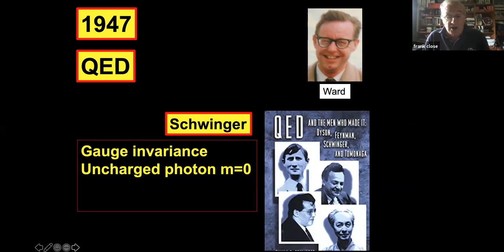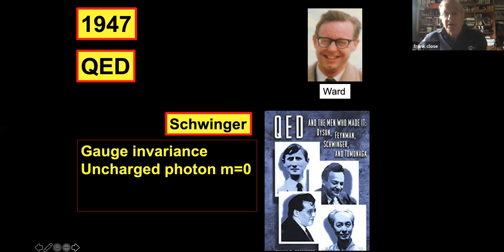Dyson — the fourth man who did not share the Nobel Prize — is the person who probably primarily proved that it was viable, using in particular the Ward identities. John Ward is another person who ended up being the fourth man who missed out on Nobel Prizes, as we will see.